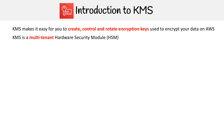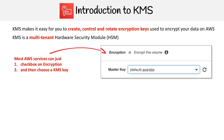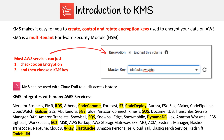KMS is a multi-tenant hardware security module, which we're going to talk about on the next slide. The main takeaway is that whenever you are using a service and you have the option to checkbox on encryption — here we have an example of EBS — you're going to checkbox on and then choose a master key, and that's all you have to do. KMS can also be used alongside CloudTrail to audit access history, so if you have to investigate who used what key, that's how you're going to do it.